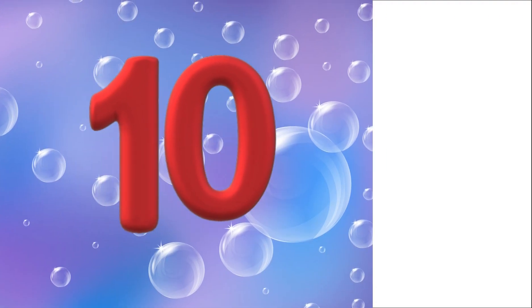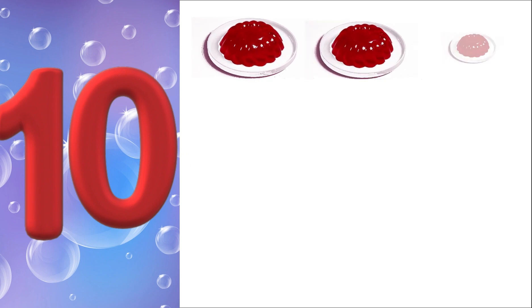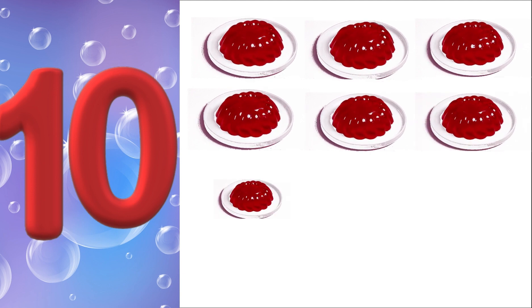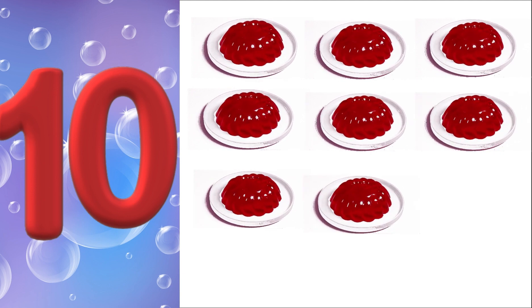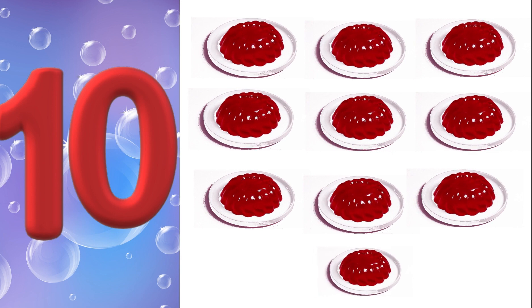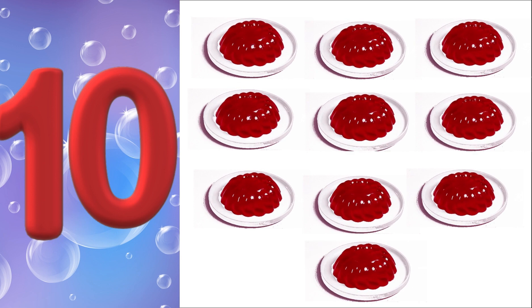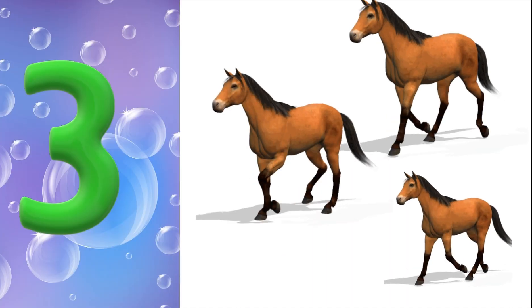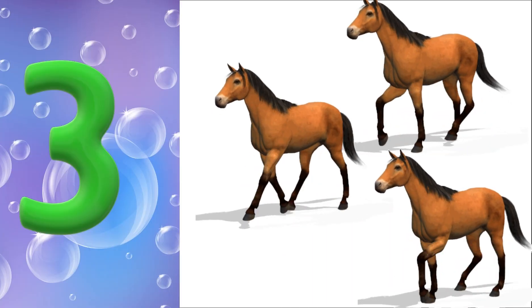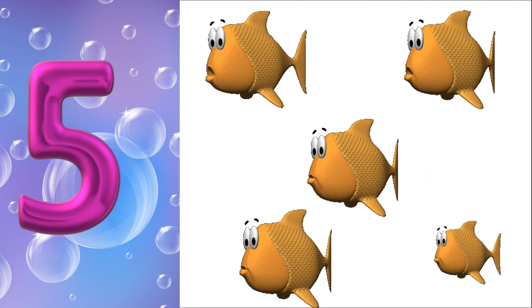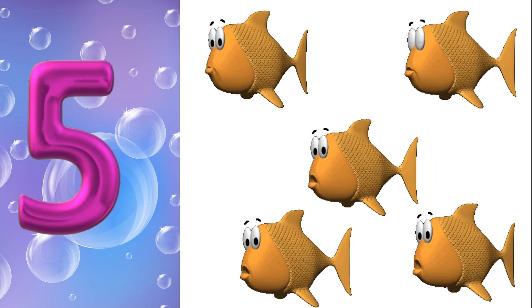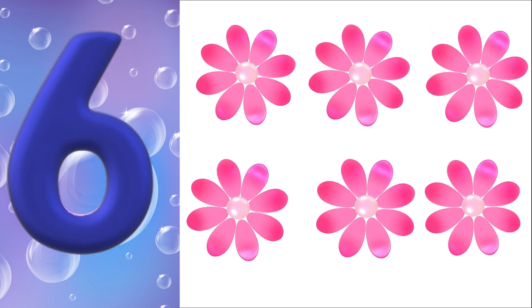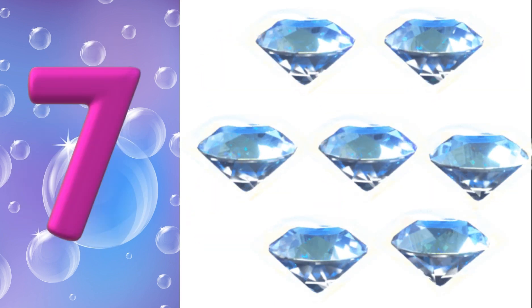10. 1 jelly, 2 jelly, 3 jelly, 4 jelly, 5 jelly, 6 jelly, 7 jelly, 8 jelly, 9 jelly, 10 jelly. 1 apple, 2 elephants, 3 horses, 4 ice creams, 5 fishes, 6 flowers, 7 diamonds.